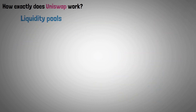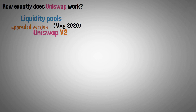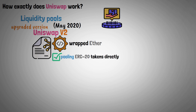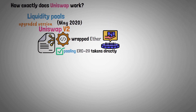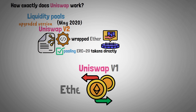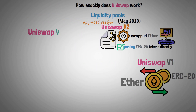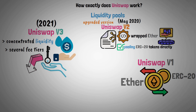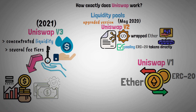Liquidity pools and an upgraded version, Uniswap V2, was unveiled in May 2020. While V2 employs wrapped Ether and core contracts to allow users to pool ERC-20 tokens directly with any other token, its predecessor V1 allowed users to swap between Ether and a single ERC-20 token. The launch of Uniswap V3 in 2021 came next, giving liquidity providers access to concentrated liquidity and several fee tiers, so they could more effectively manage their capital and earn more fees in the process.